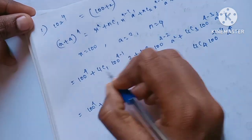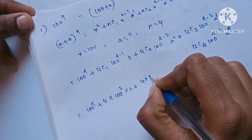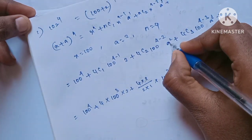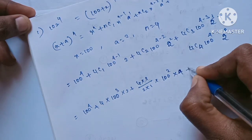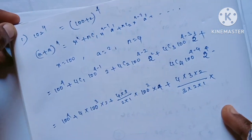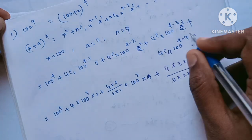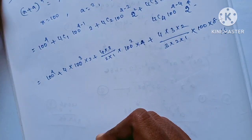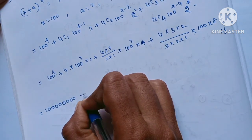4C1 is 4, into 100 power 3, into 2. 4C2 is 4 into 3 by 2 into 1, into 100 squared, into 8. Then 2 to the power 4 plus 4C3 is 4 into 3 into 2 by 3 into 2 into 1, into 100 power 1, into 2 to the 4, that is 4 into 8. Plus 2 power 4 is 16.